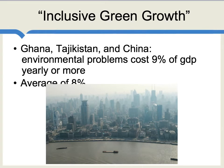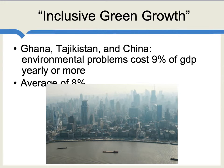It's also becoming more widely recognized that pollution itself may damage economic growth. A recent World Bank study looked at Ghana, Tajikistan, and China, and found that in those countries, environmental problems may cost 9% of GDP a year, or possibly more. For the countries surveyed, the average cost was about 8% of GDP. Air pollution in Shanghai and Chinese cities generally is a very serious problem, as it is in many Indian cities. One economic cost is that it makes people less productive, leads to greater health ailments, and overall lowers economic output.